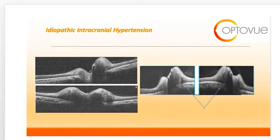This is another slide of disc edema as a result of idiopathic intracranial hypertension. On the left-hand side, you can see the smooth internal contour that we discussed in previous slides. On the right-hand side, you can see what we call an inward angulation of the peripapillary RPE Bruch's membrane layer, as illustrated by the blue arrows. This inward angulation does not occur in other causes of disc edema.